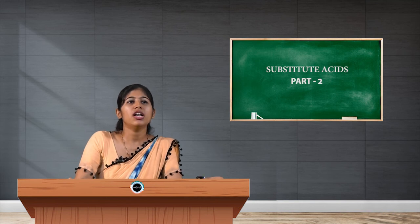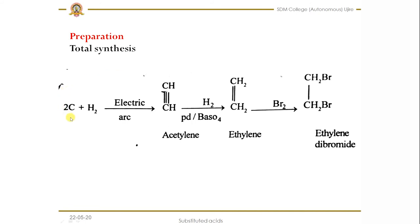I am going to explain one method called total synthesis. In total synthesis, organic carbon is treated with hydrogen in an electric arc, and acetylene (CH≡CH) is formed. When acetylene is treated with palladium in the presence of barium sulfate, reduction takes place and we get ethylene. When ethylene is treated with bromine, the double bond breaks in an addition reaction, and we get dibromoethane (ethyl bromide).